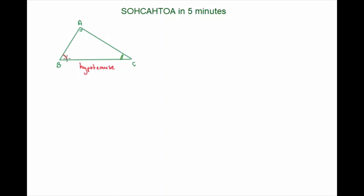If we say B is the angle that we know and that we'll be working with, then the side next to it will be the adjacent side, and the other one — the side opposed to it — will be the opposite side. So for angle B: AC is the opposite, AB is the adjacent, and BC will be the hypotenuse. BC is the hypotenuse because it is opposite the right angle.